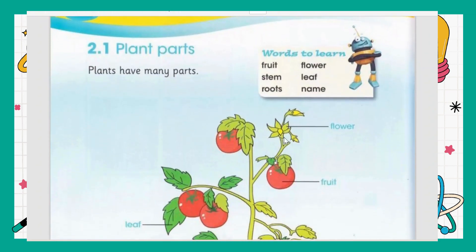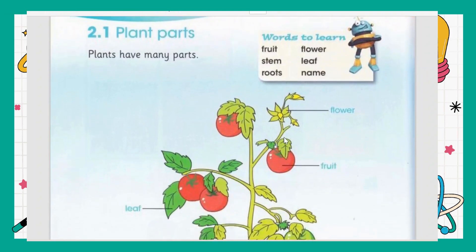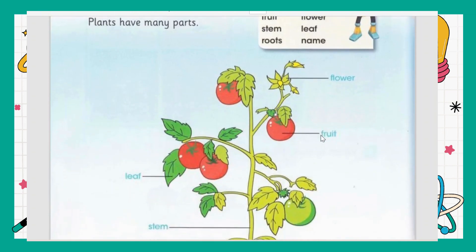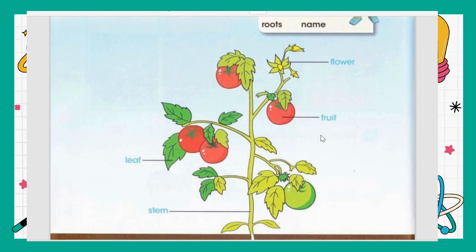Similar to the human body, plants also have many parts. Just like the human body has eyes, nose, ears, and mouth, plants also have many parts. For example, one part is the flower — F-L-O-W-E-R, flower.